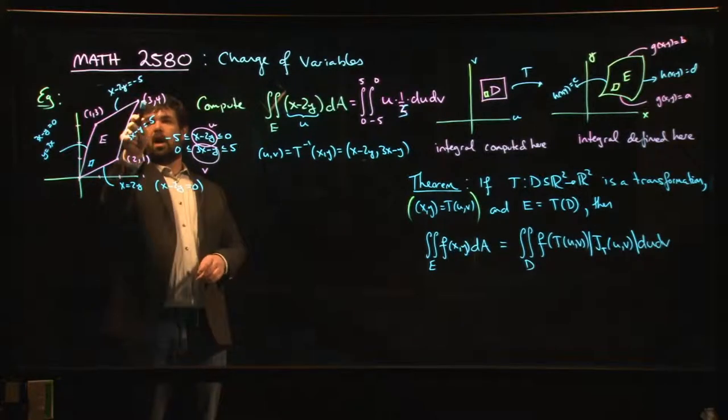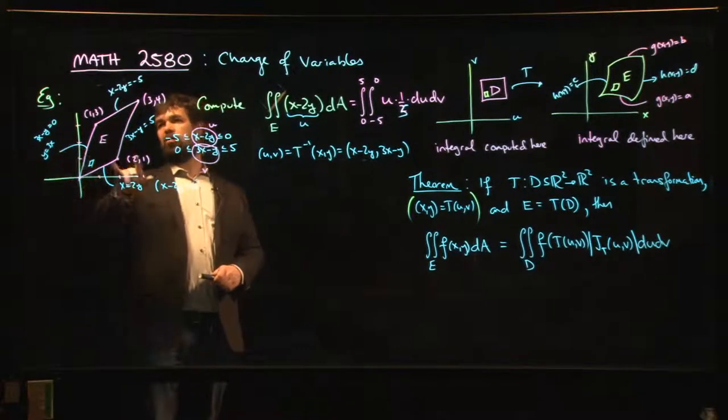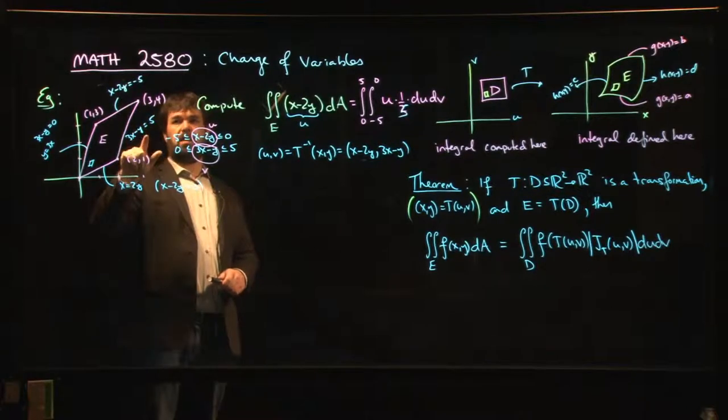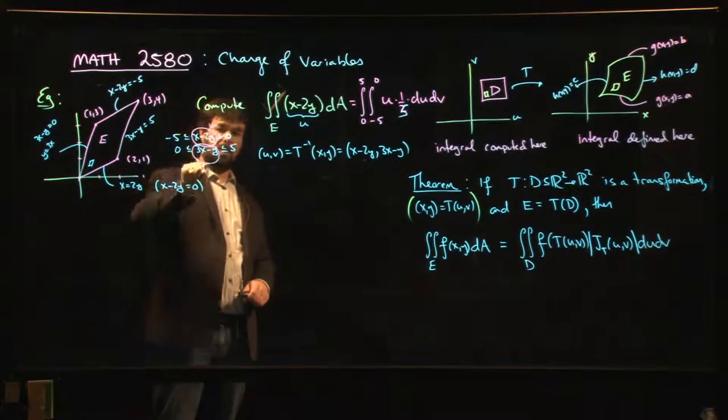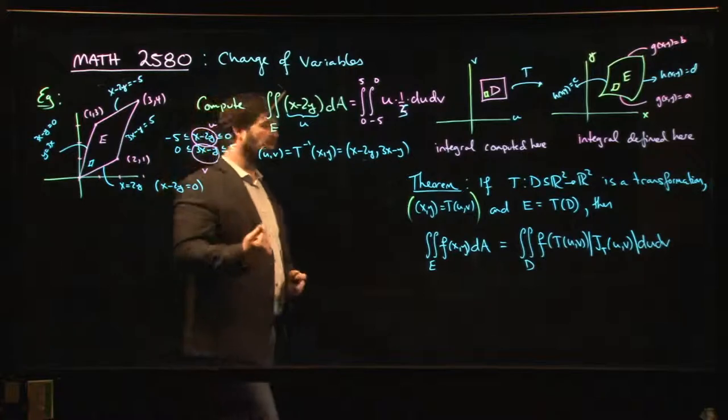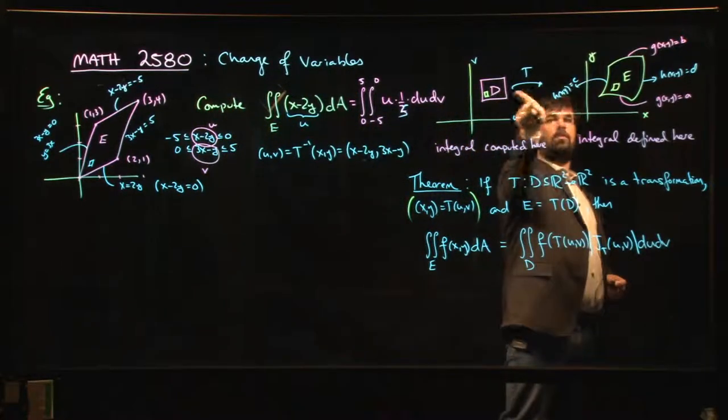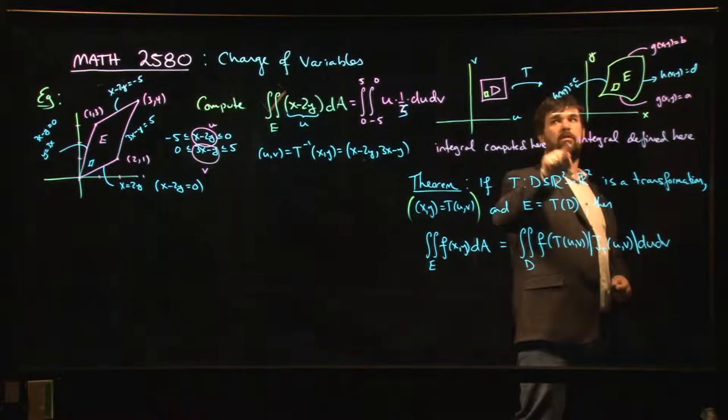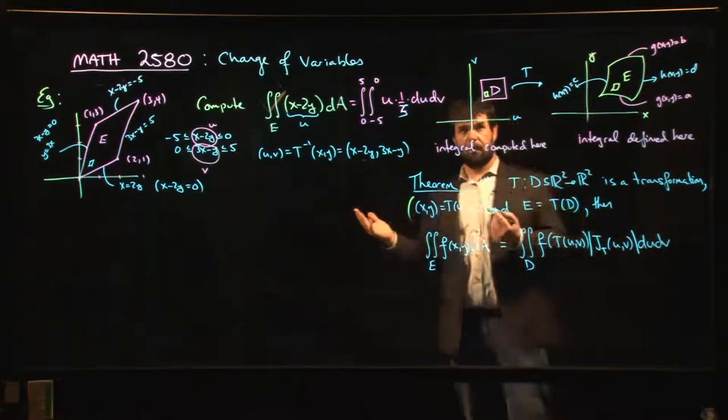The trouble is when you look at the region and you start thinking about how to describe the boundary, you're describing the boundary by setting functions of x and y equal to constants. This tells you usually what this tells you is a way to define u and v in terms of x and y. Well, that doesn't give you the transformation T, because T is supposed to go from here to there - it's supposed to tell you how to define x and y in terms of u and v.